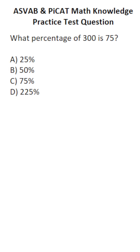Let's translate that into an equation. 75 is — 'is' means equal. What percentage — that's unknown, so call it P. Of 300 means multiply by 300.